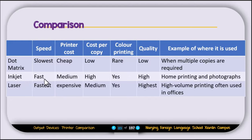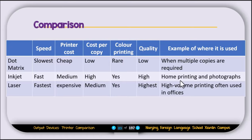The inkjet printer is faster than the dot matrix and has a medium printer cost. The cost per copy is high because you have to replace the cartridge regularly. You can print color documents using the inkjet printer. The print quality is high and it is used for home printing and photographs.